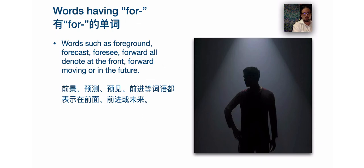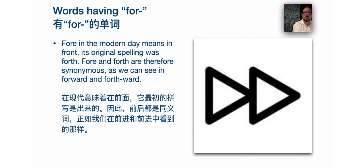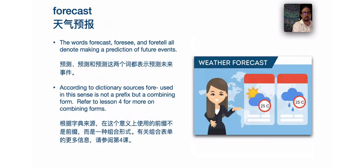Words such as foreground, forecast, foresee, and forward all denote 'at the front,' forward-moving, or in the future. 'Fore' in the modern day means 'front.' In the original spelling it was 'forth,' so 'for' and 'forth' are therefore synonymous, as we can see in the words forward and forthward — both words in use today that mean the exact same thing, coming from the same original word, forth. When we see 'fore' — F-O-R-E — most likely we're looking at this kind of meaning.